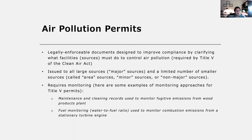Another approach I'll go into in more detail is air pollution permits. These are legally enforceable documents designed to improve compliance by clarifying what facilities have to do to control their pollution. They are required by Title V of the Clean Air Act, enacted in 1990. These permits are issued to all large sources — called major sources — and also a limited number of smaller sources, which are called area sources, minor sources, or non-major sources.